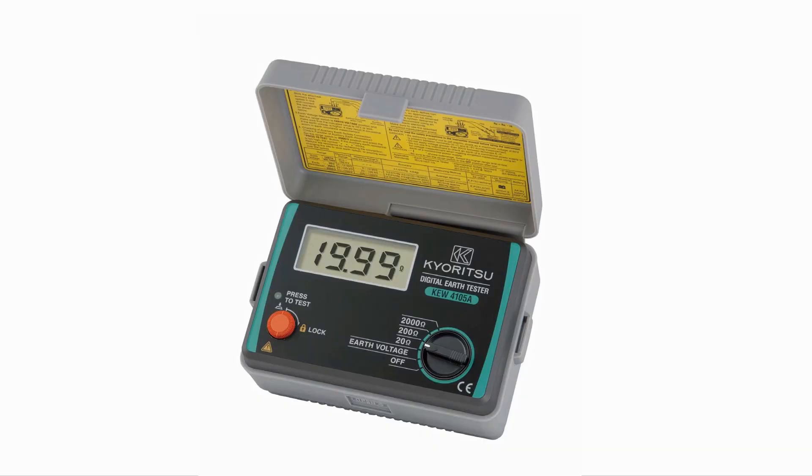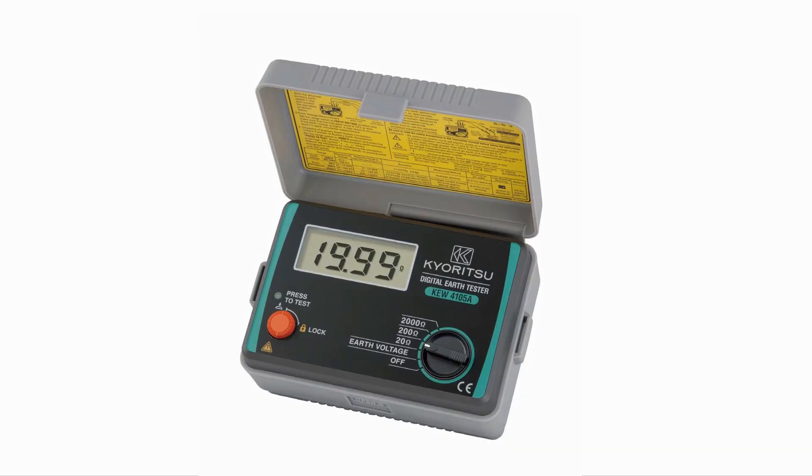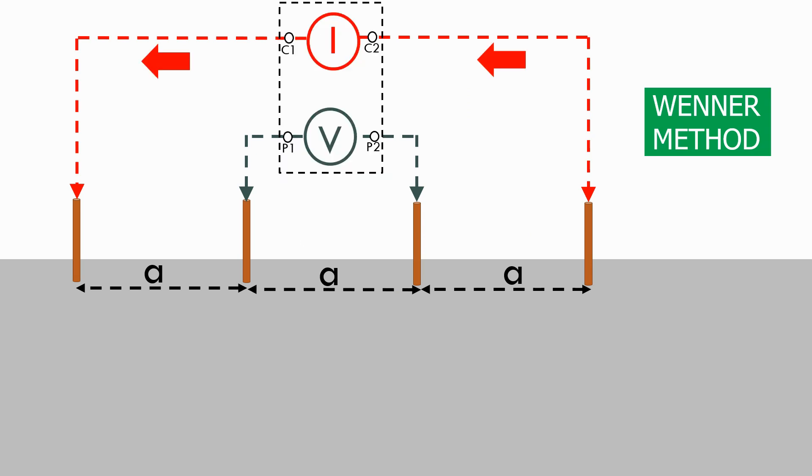Here's a typical example. If we look inside the meter we can see that it injects current into the two outer rods and then measures the voltage on the two inner rods and then uses both the voltage and current values to work out the resistance measured.